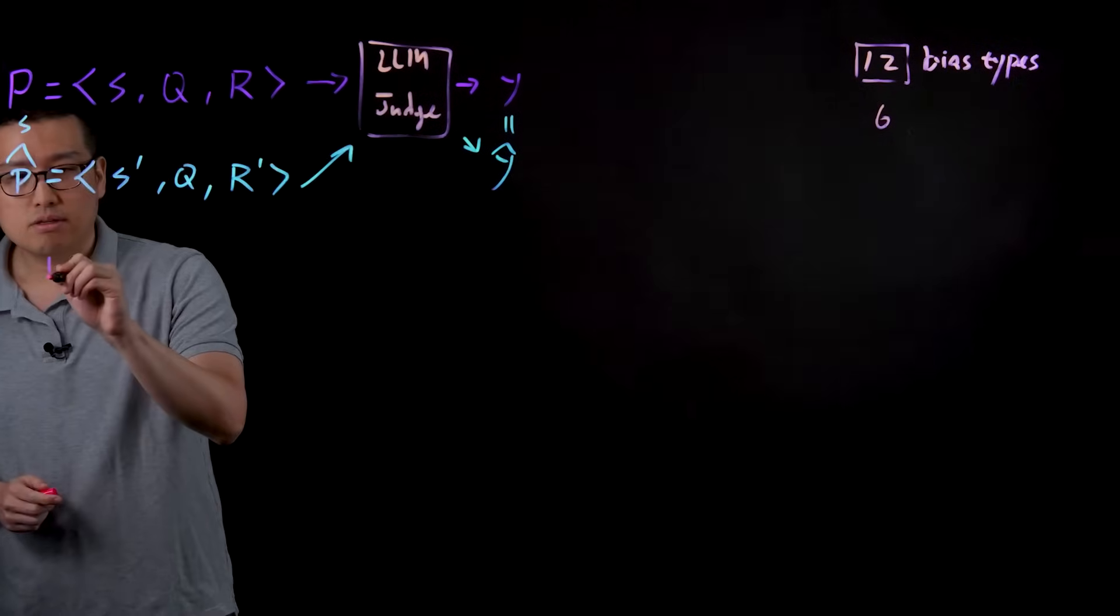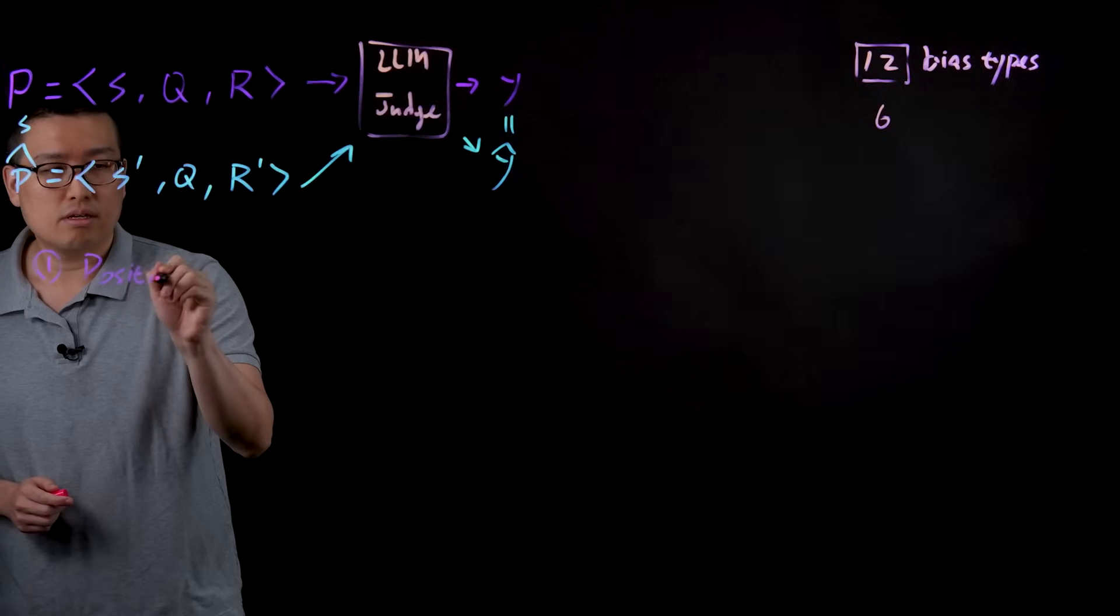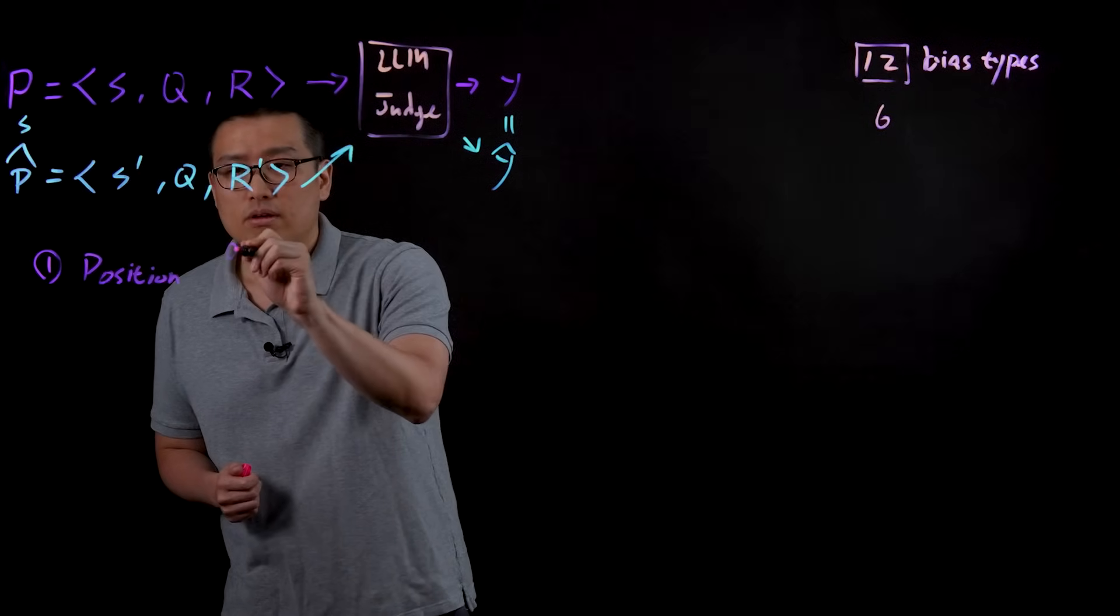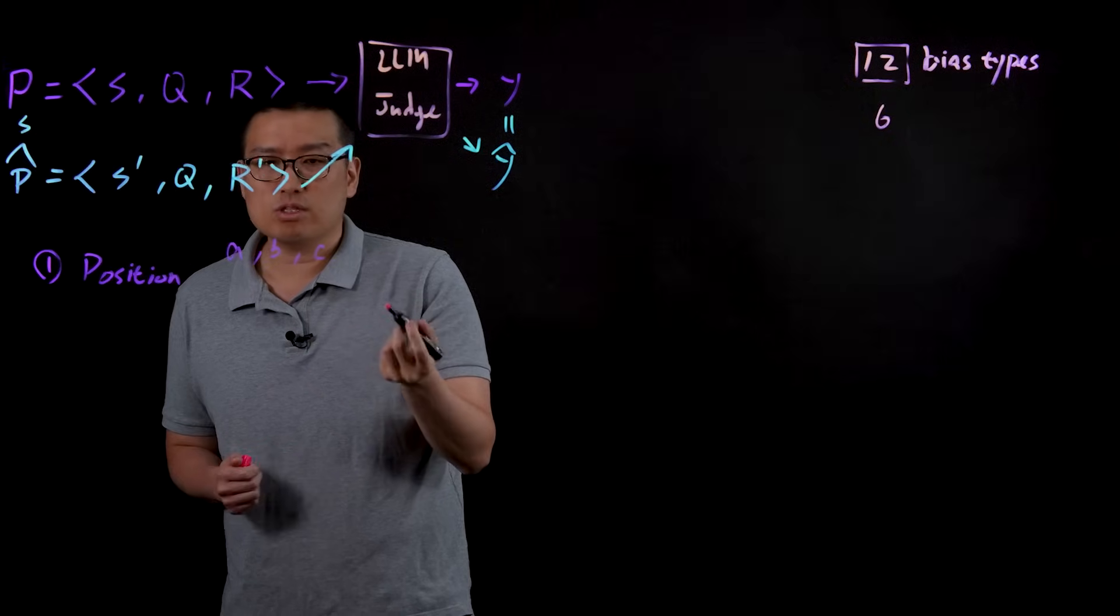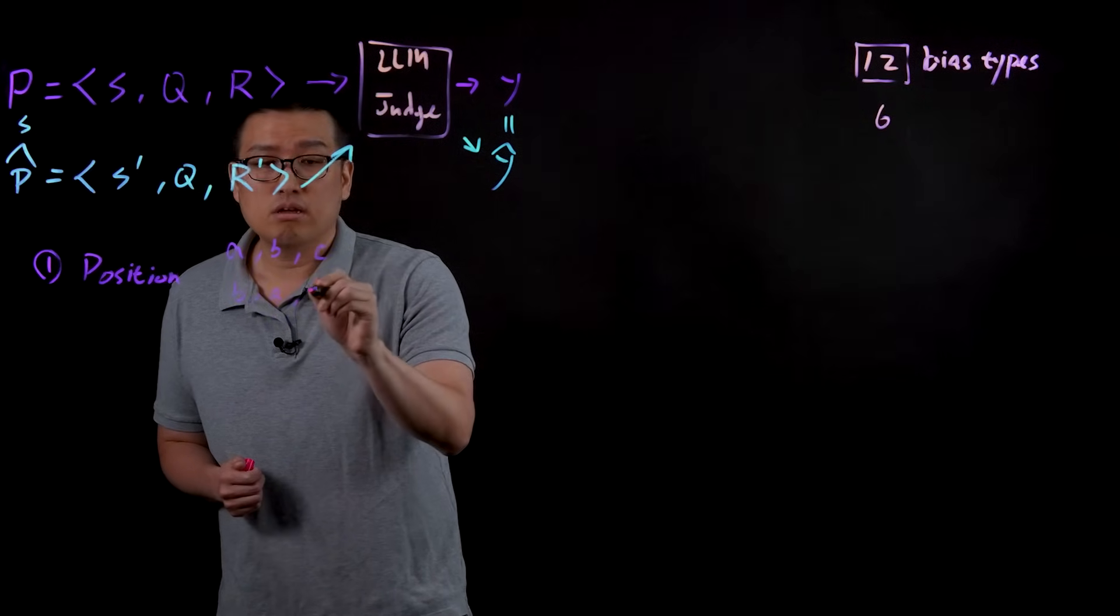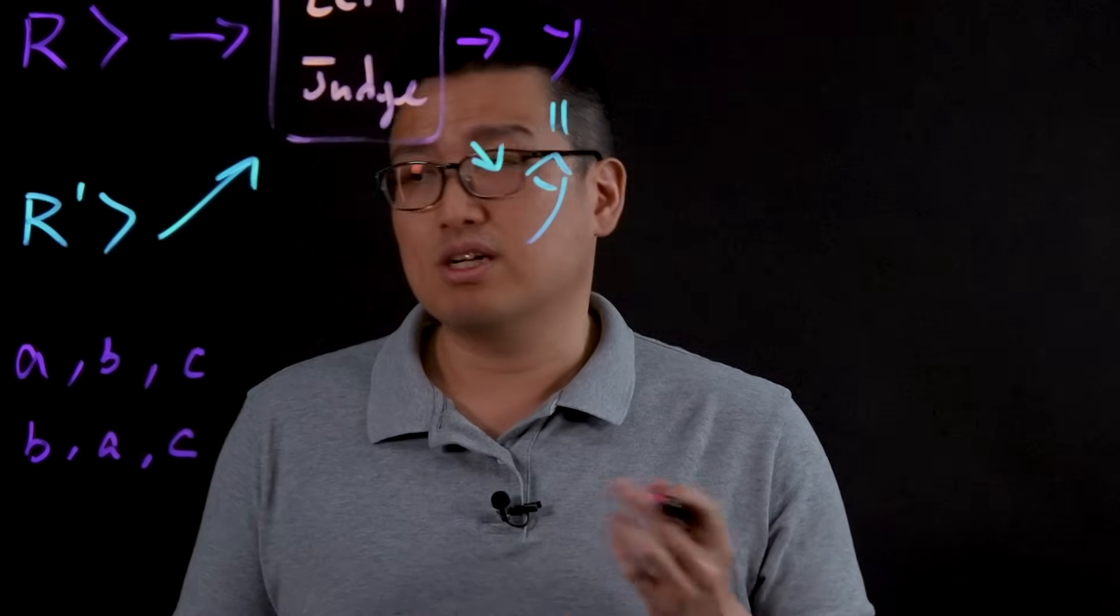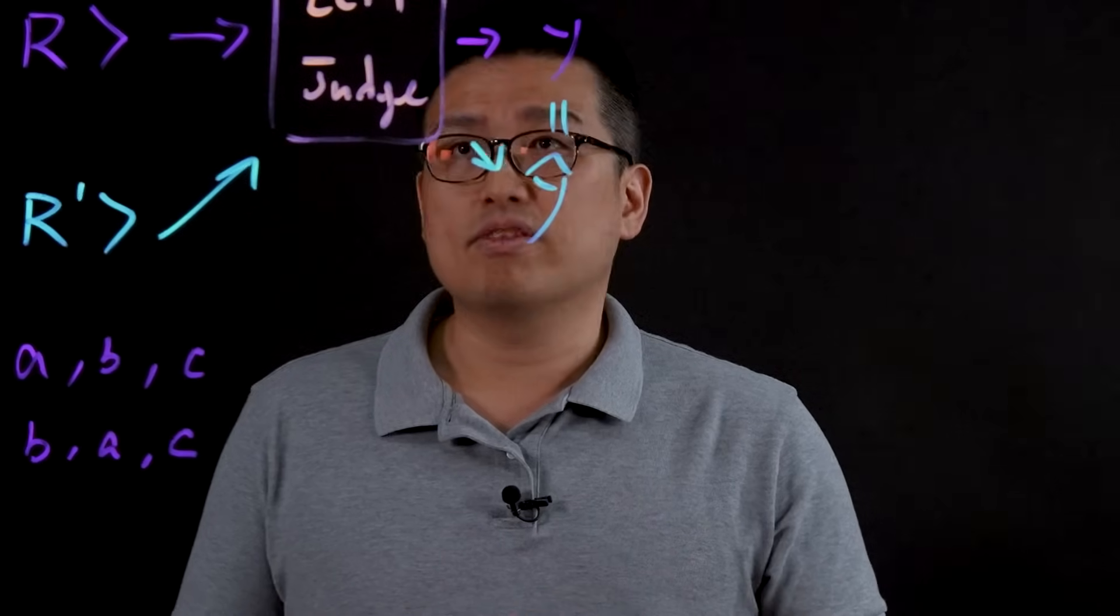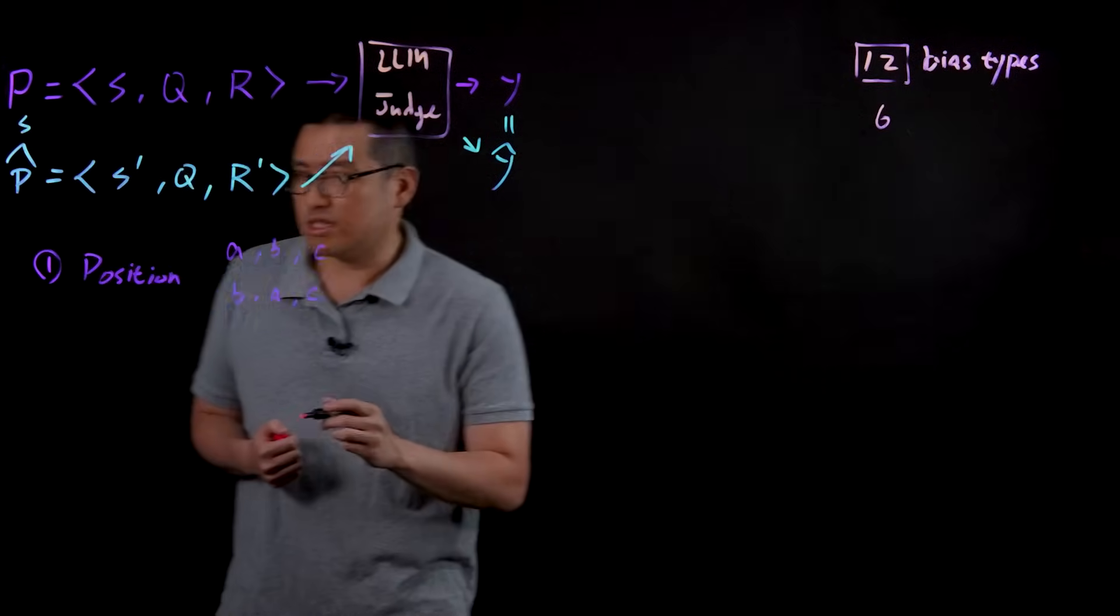The first one is position bias. So this is a very naive testing where we purposely swap the position of the candidate response. For example, we ask which one out of ABC is better and then we swap the order to BAC. So ideally, language models should give consistent results no matter how we swap the position of the candidates. However, we found that many of the LLM judges are still not immune to position swap, which is not ideal.